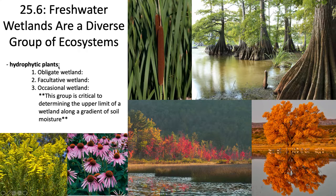Associated with wetlands are hydrophytic plants — plants adapted to grow in water or in soil that is periodically anaerobic or deprived of oxygen because of excess water. When excess water builds up, it creates an anoxic or anaerobic environment, and hydrophytic plants are adapted to grow in those conditions.